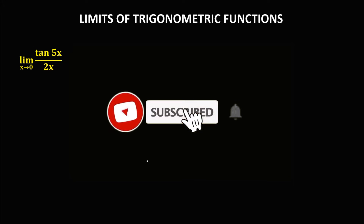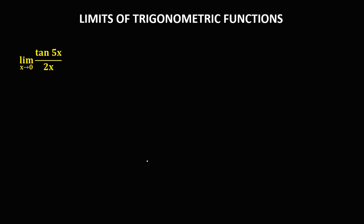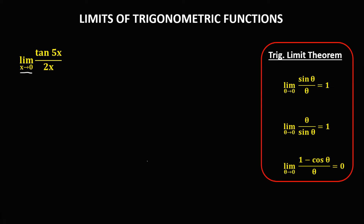Welcome to Mathstoria. Today's topic is finding the limits of trigonometric functions. We have this given: the limit of tangent(5x) over 2x as x approaches 0. Using the trigonometric limit theorem, we first need to rewrite tangent(5x) in terms of sine or cosine using the trigonometric identities.